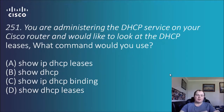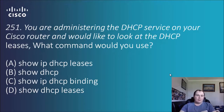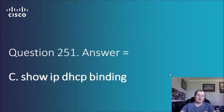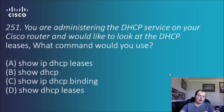Question 251: you are administering the DHCP service on your Cisco router and would like to look at the DHCP leases. What command would you use? The options are: show IP DHCP releases, show DHCP, show IP DHCP binding, and show DHCP releases. It always comes down to simple syntactic information — the answer is C, 'show IP DHCP binding'. I probably would have elected A but the answer is C.